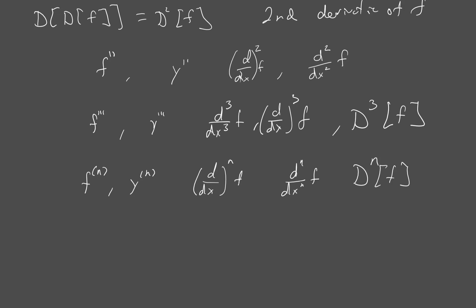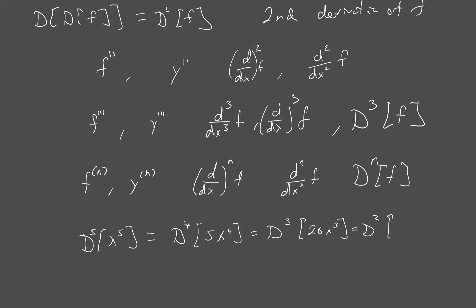Those notations just mean take the derivative that many times. For example, the fifth derivative of x to the fifth: the first derivative by the power rule is 5x to the fourth, the second is 20x cubed, the third is 60x squared, the fourth is 120x, and the fifth is just 120. So the fifth derivative of x to the fifth is 120.